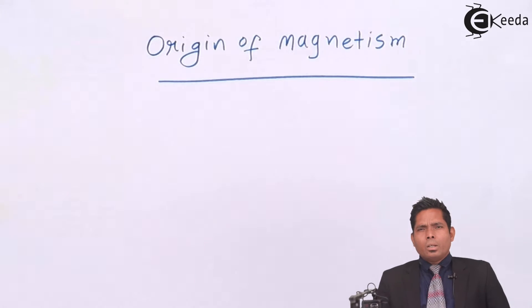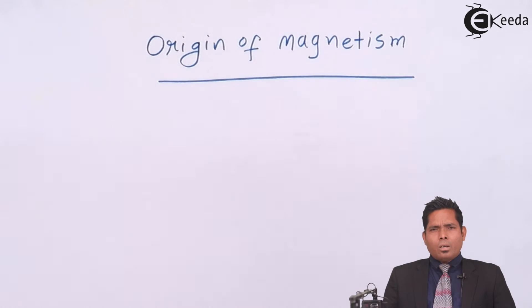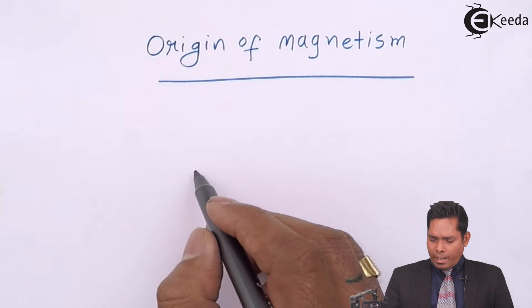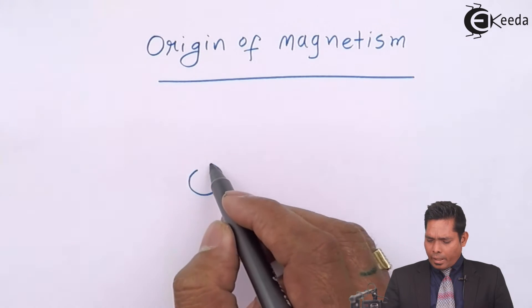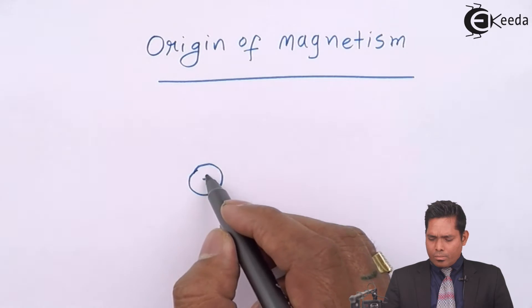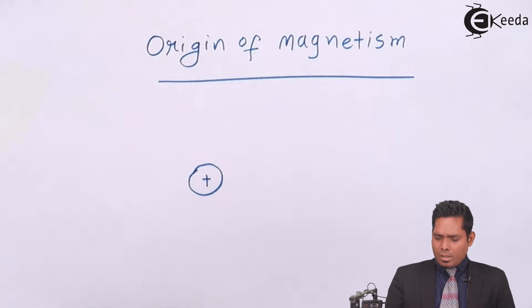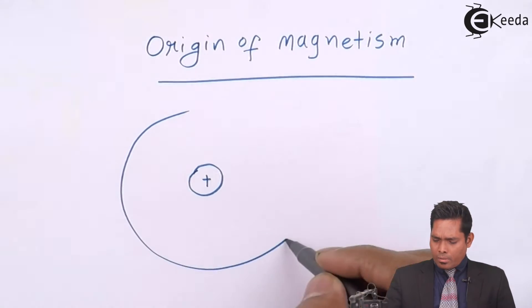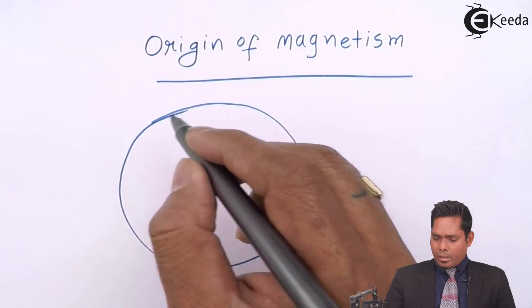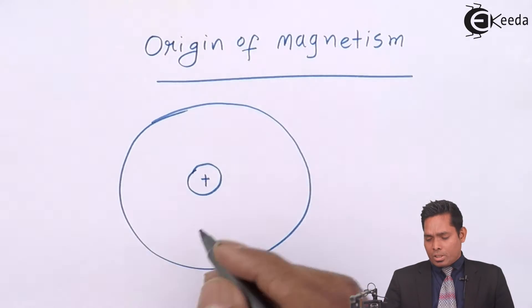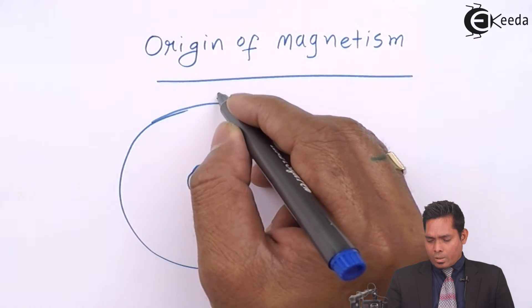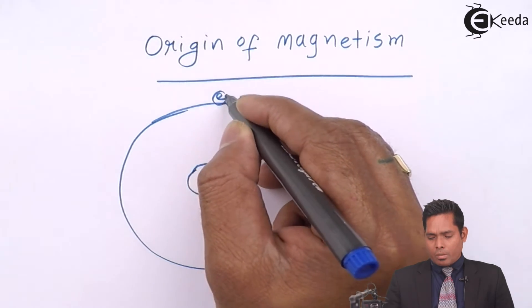If we think of an atom, the atom has a nucleus which is positively charged, and electrons are revolving in circular orbits around the nucleus. So, these are the electrons which are revolving.